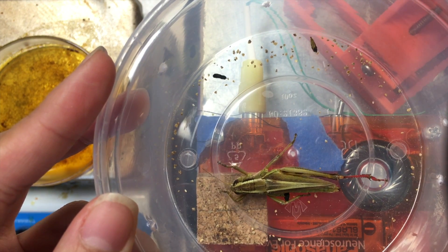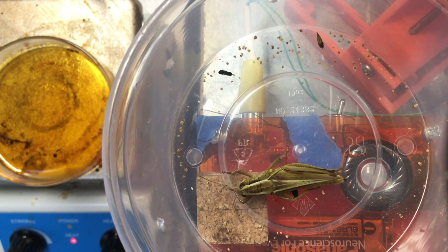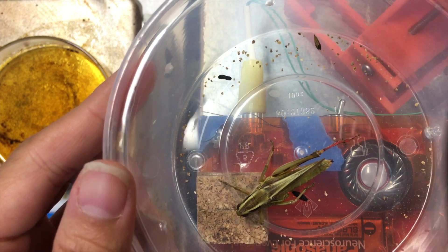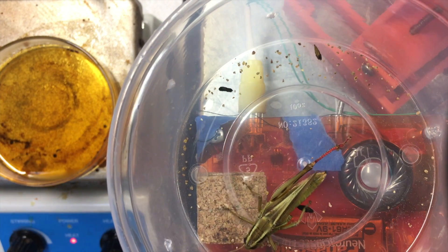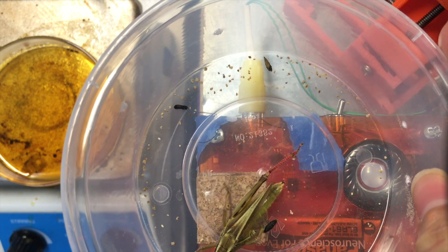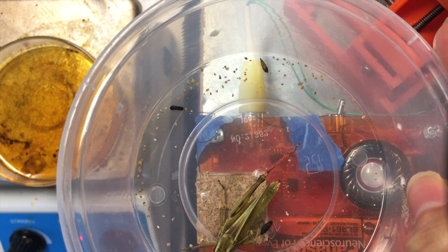I'm studying the neuroscience behind the grasshopper's ability to quickly jump away when it sees an approaching object, like a predator. Their visual system includes a type of neuron called the descending contralateral motion detector neuron, or DCMD for short.